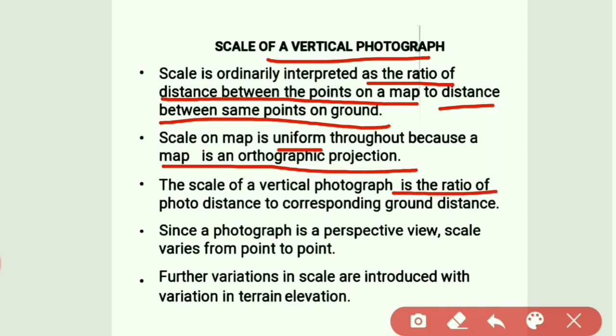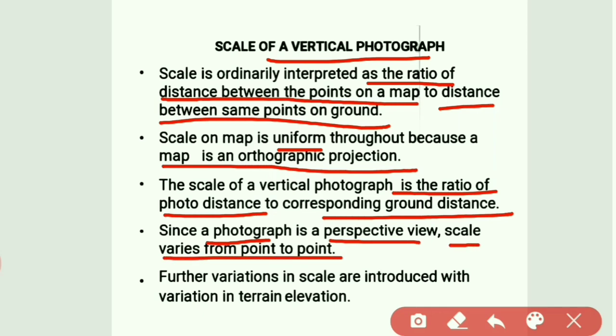The scale of a vertical photograph is the ratio of photo distance to the corresponding ground distance. Since a photograph is a perspective view, scale varies from point to point. Jo bhi hum vertical photograph dekhte hain woh perspective view hota hai, isliye point to point scale change ho sakta hai. Further, variations in scale are introduced with variation in terrain elevation — ground ka elevation change hoga to scale bhi change ho sakti hai.